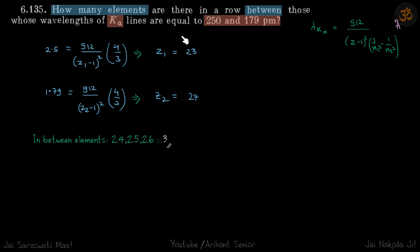2.5 because this is in Angstrom. So we need to convert this into Angstrom. So 2.5 is equal to 912 by (z1 minus 1) into 4 by 3.